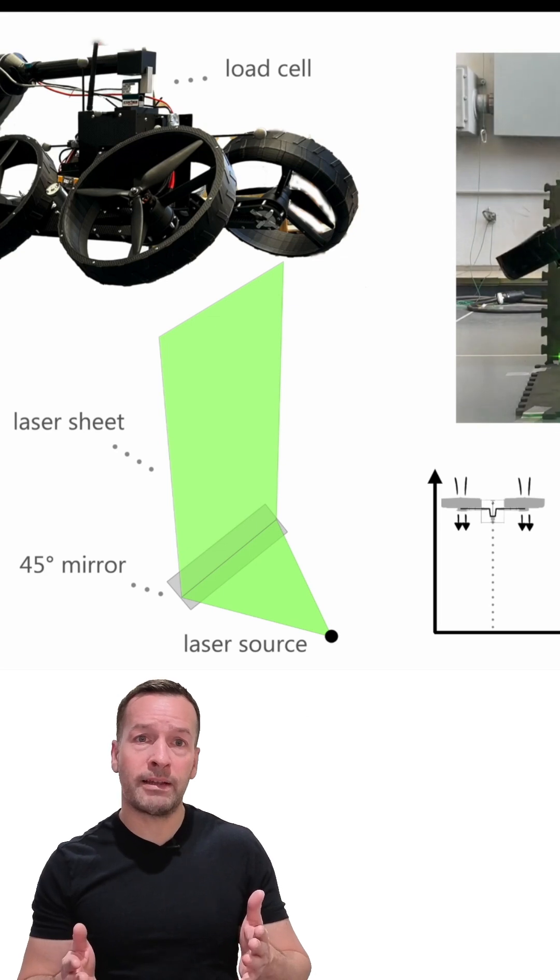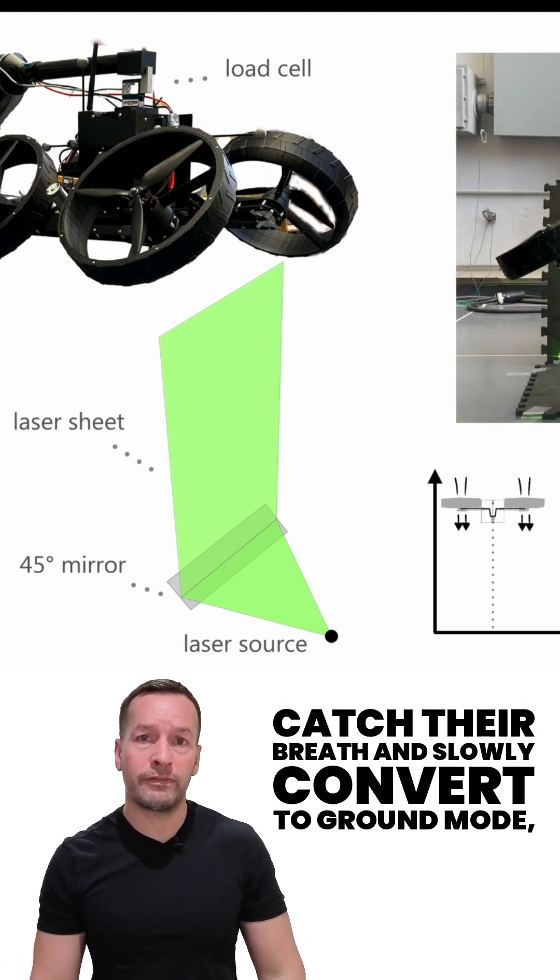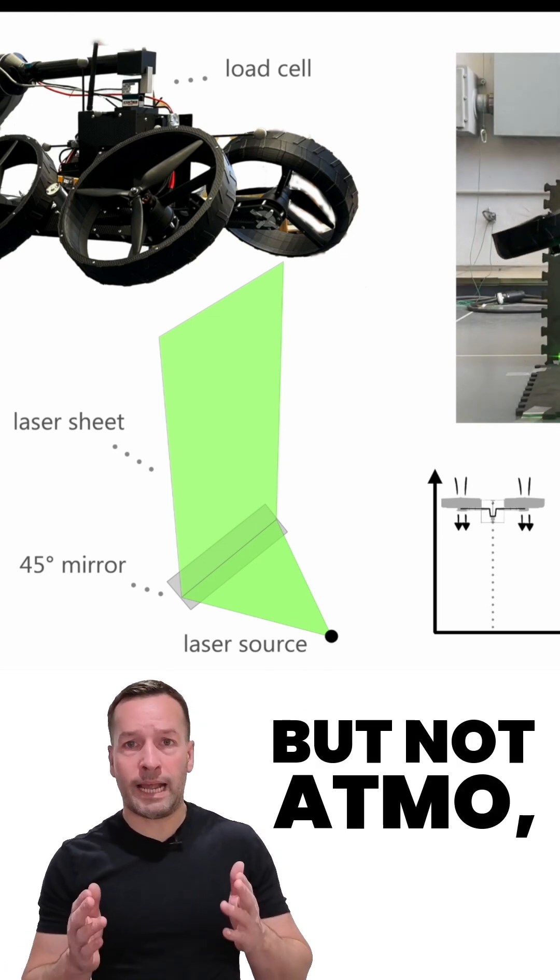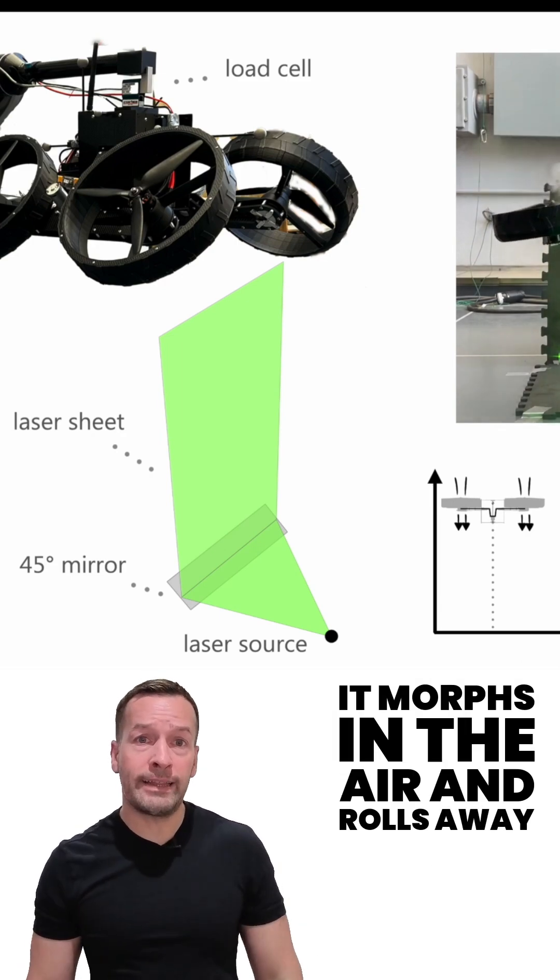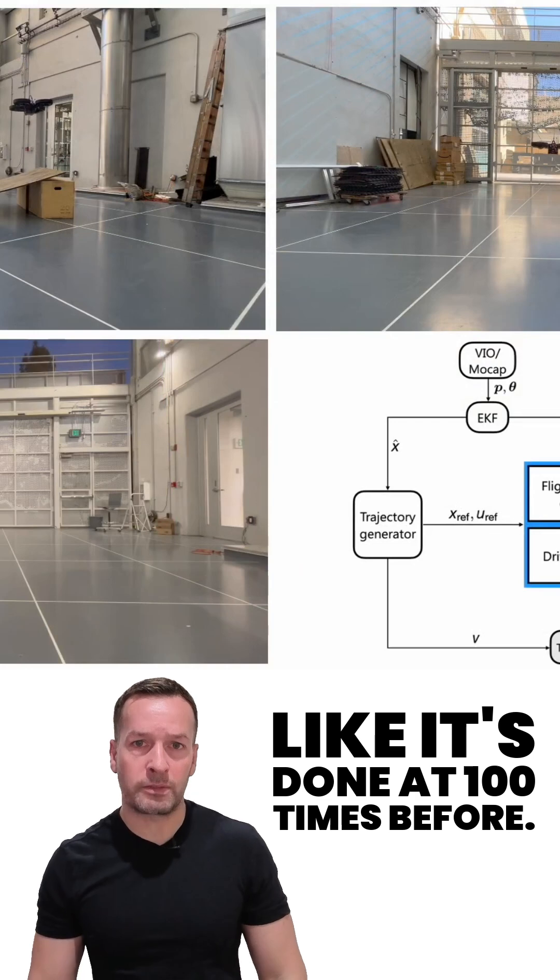Most flying robots touch down, catch their breath and slowly convert to ground mode, but not ATMO. It morphs in the air and rolls away like it's done it a hundred times before.